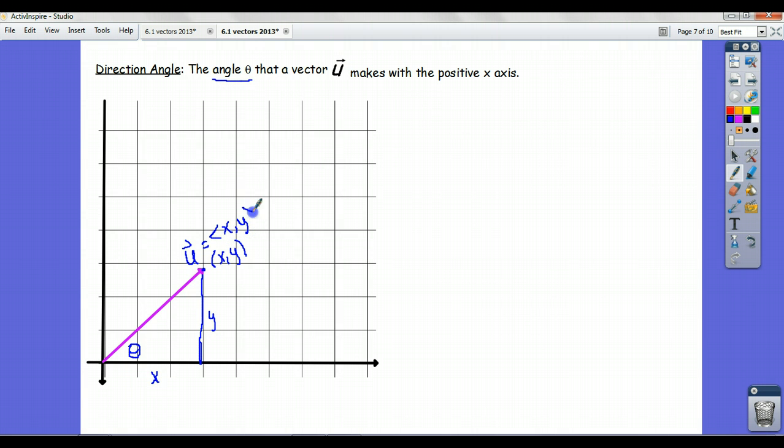The component form of this vector is x, y. Notice the subtle difference: this is the point x comma y, and because of where we situated u, the vector in component form is also x comma y.